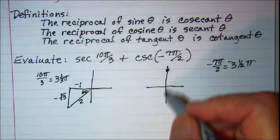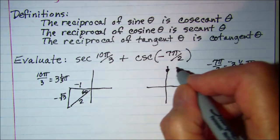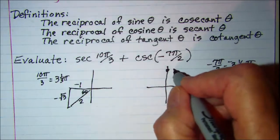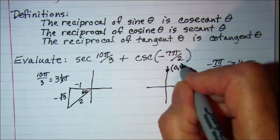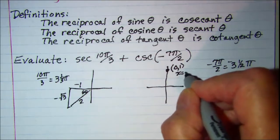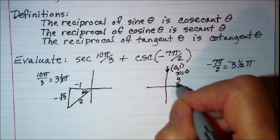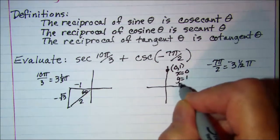So for this point which has coordinates (0, 1), my x is 0, my y is 1, and r is 1.